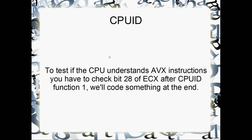CPUID - this will be the actual function that we program at the end. Just a little CPUID detection program to make sure that our CPUs understand AVX. It's function number one of CPUID, and the flag we want to check is bit number 28 of ECX after CPUID function number one. We'll do that at the end.